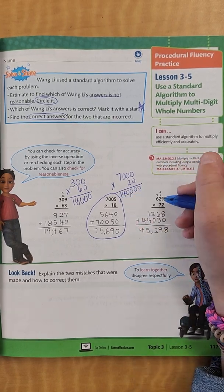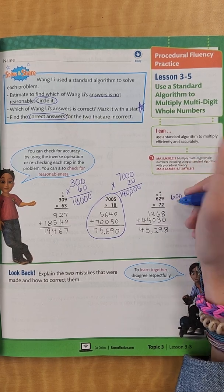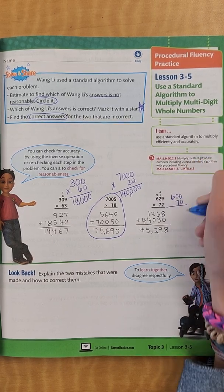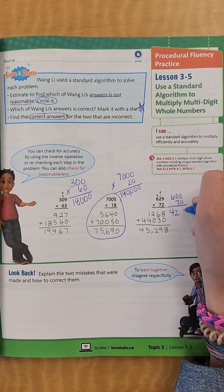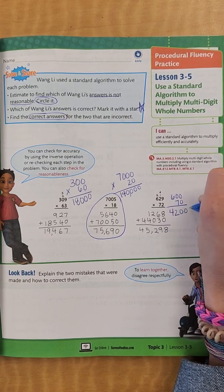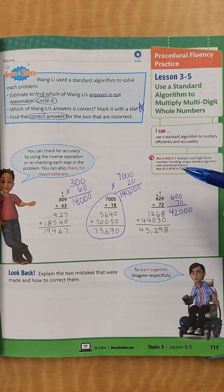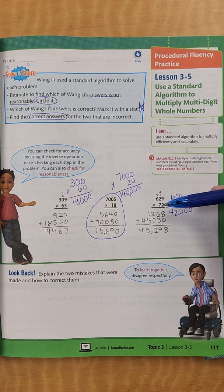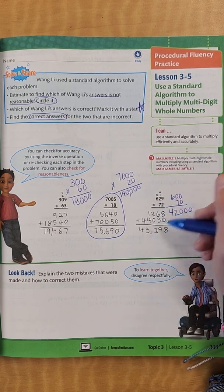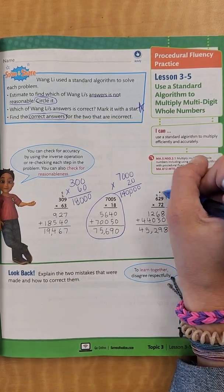And then we're going to look at this one. Again, we're going to estimate 600 and then 72 is going to round to 70. And then I'm going to multiply - I know that 6 times 7 is 42 and I add 1, 2, 3 zeros. So I would think that this one is not as reasonable because it's a little bit further away. So we're going to circle this.